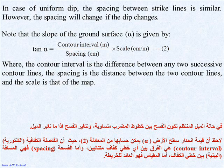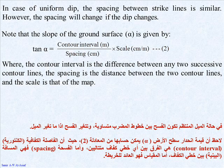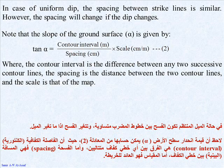The slope of the ground surface is given by: tan(alpha) equals the contour interval in meters divided by the spacing in centimeters times the scale in centimeters per meter, where the contour interval is the difference between any two successive contour lines, the spacing is the distance between the two contour lines, and the scale is that of the map.